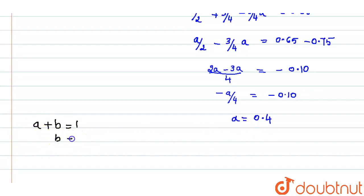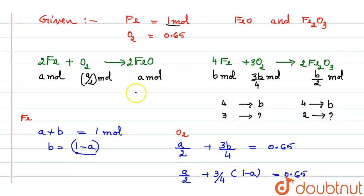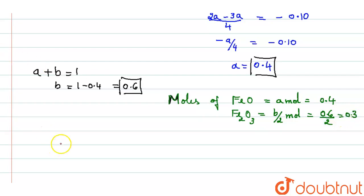Now we find the moles of FeO and Fe₂O₃. FeO was taken as 'a' moles, so FeO = 0.4 moles. Fe₂O₃ was taken as b/2 moles, so Fe₂O₃ = 0.6/2 = 0.3 moles. Therefore the ratio of FeO to Fe₂O₃ is 0.4 : 0.3, simplified as 4 : 3.